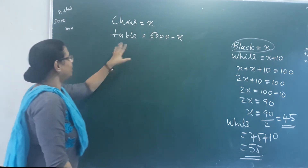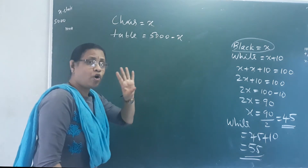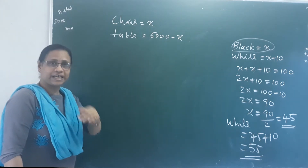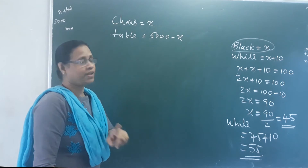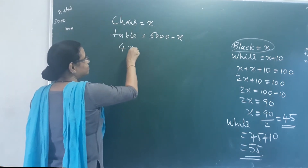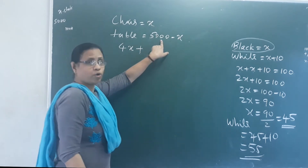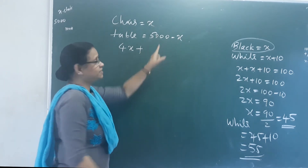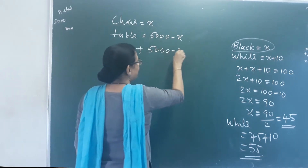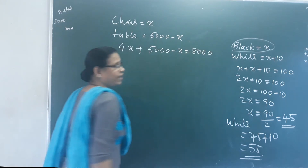One table and 4 chairs is 8,000 rupees. So 4 chairs is 4X. Plus one table — the price is 8,000.